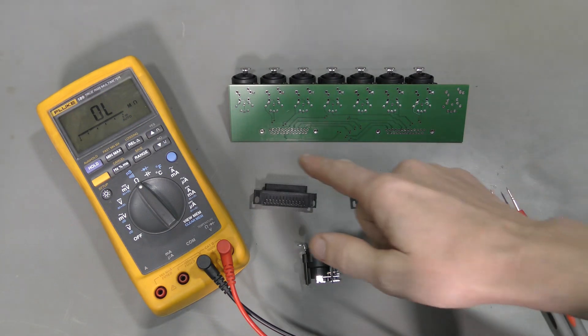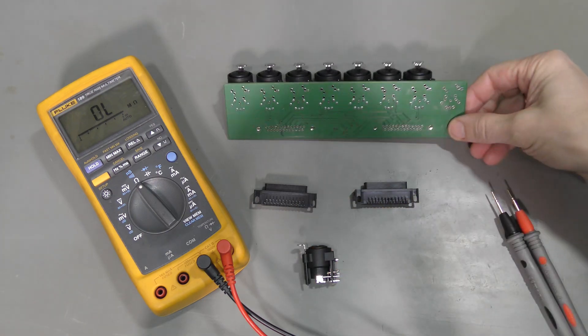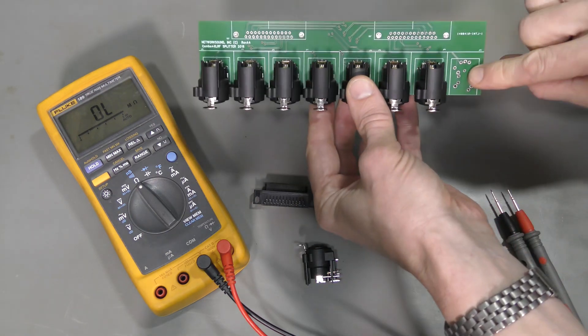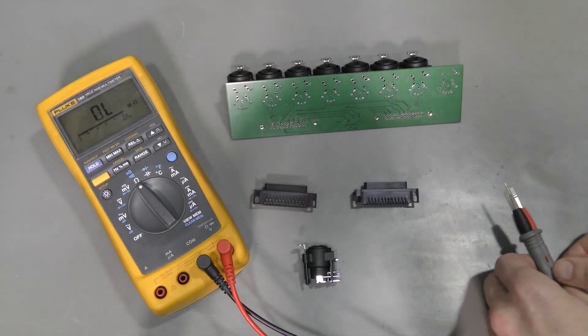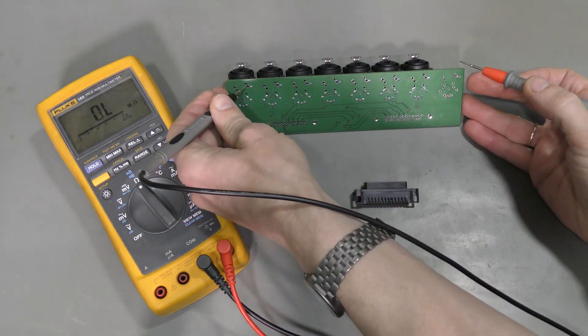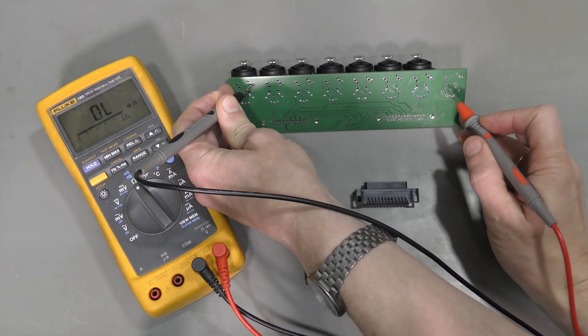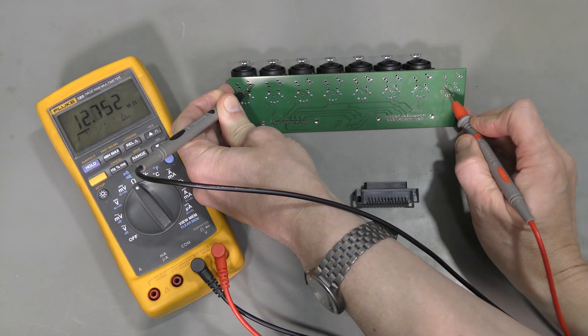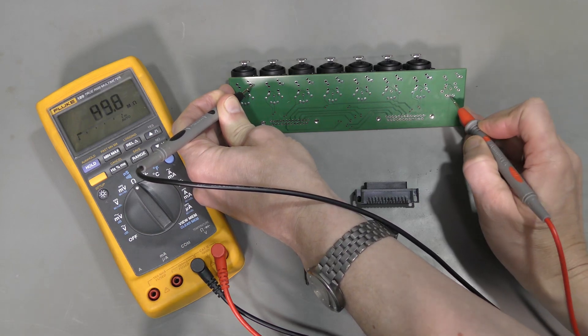I desoldered both DB25 connectors and one input connector. So now this channel has PCB traces only. And look at this. I am going to use this ground, so I don't touch anything. And this is one line of the differential pair. And this is the other one.